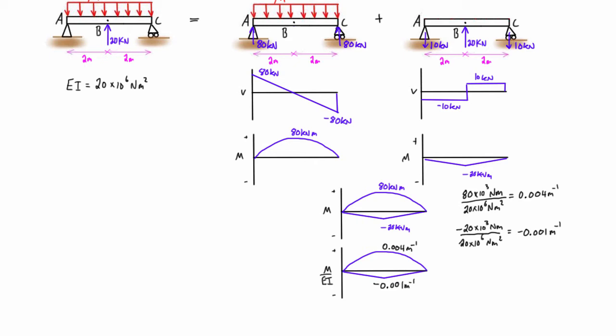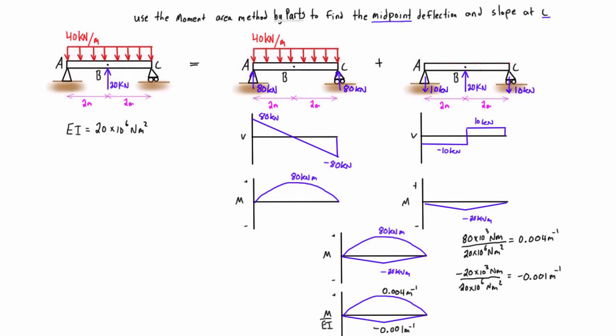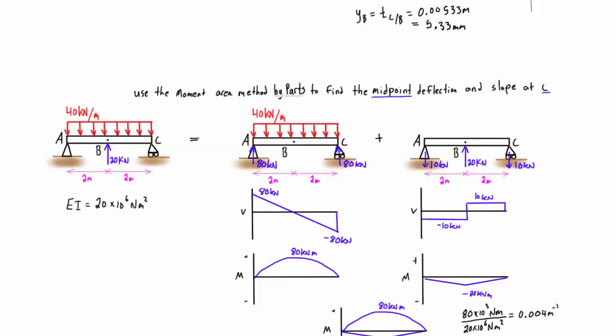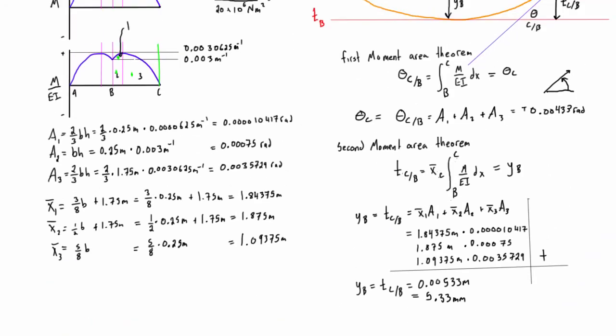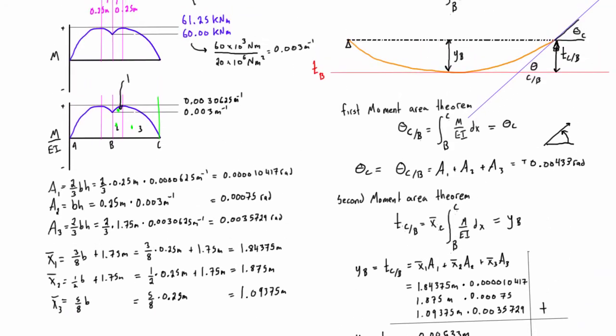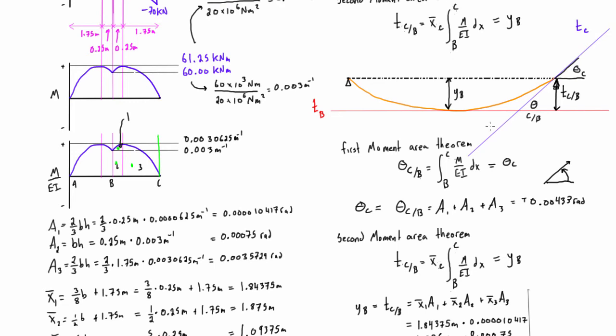Cool, so now we have basically just the critical points that we need on the M over EI diagram. And if we go back and look at what the question was, we are using moment area method by parts to find the midpoint deflection and the slope at C. So when we're thinking about where to place our bounds for the first and second moment area theorem, we're going to pick the same ones that we did in the first video, basically the midpoint here, I believe it's point B, and then C here.